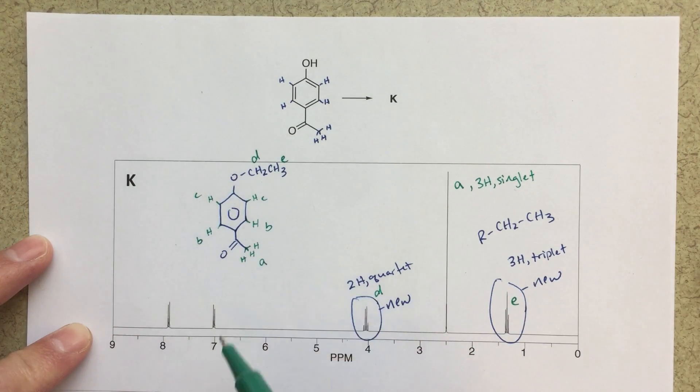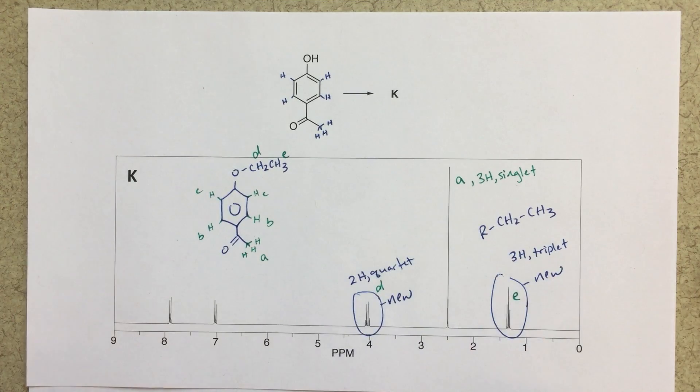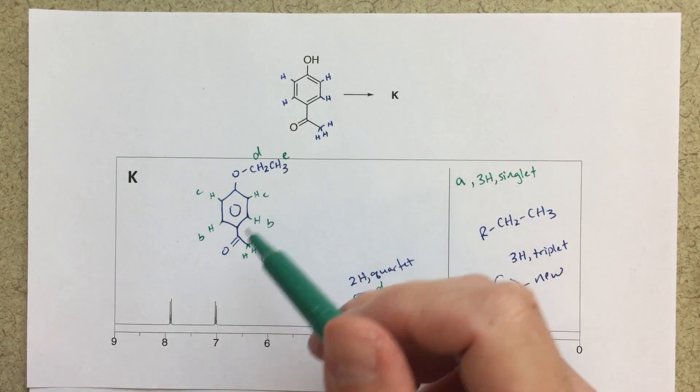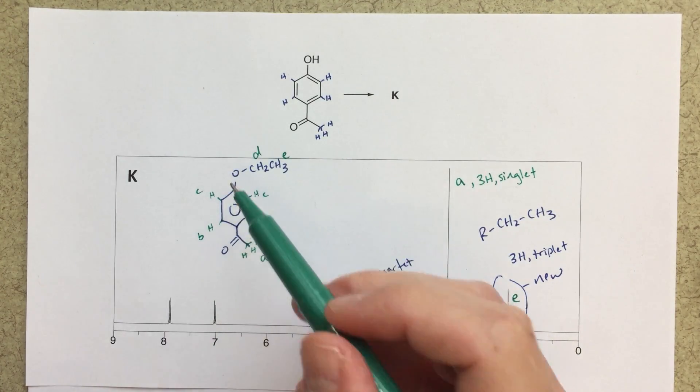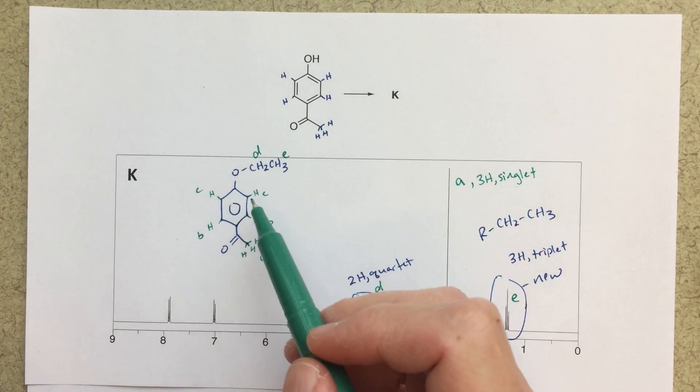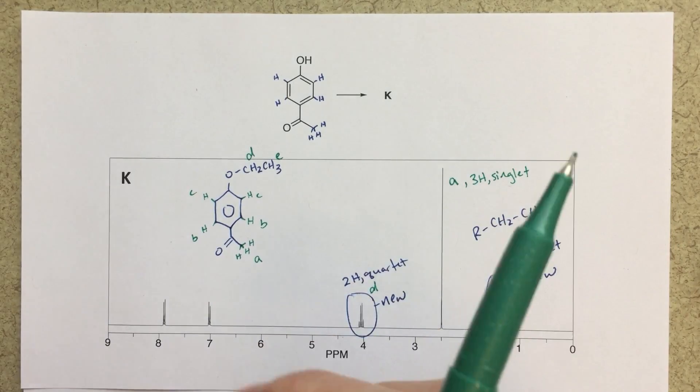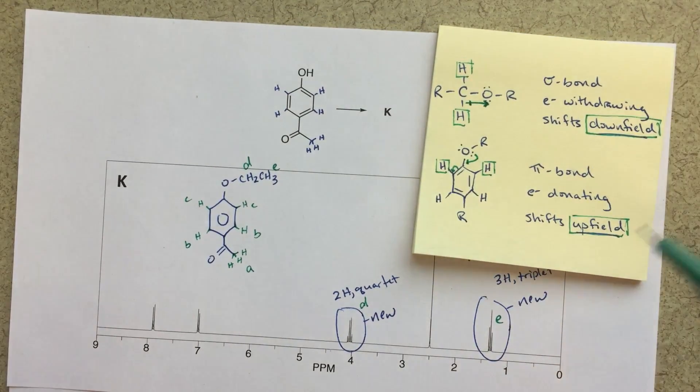And that leaves b and c. Now b and c, this is a really common mistake that people are going to make in terms of identifying which one of these is b and which one of these is c. We might think that since we see this oxygen group here that that's going to withdraw electrons and shift these protons c more downfield. But that is not the case and the reason for that I think is explained by this little sticky note.